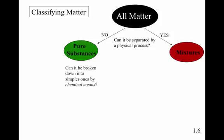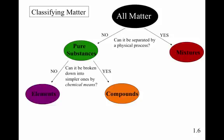But we might be able to break it down by chemical means. If we can break it down by chemical means, then we're going to call this a compound. So carbon dioxide would be a compound. By chemical means, we could break it into carbon and oxygen. But oxygen is an element. We can't break it down any further.